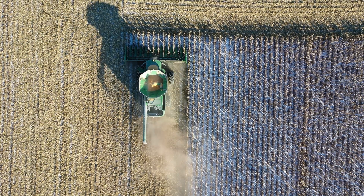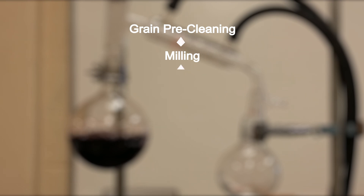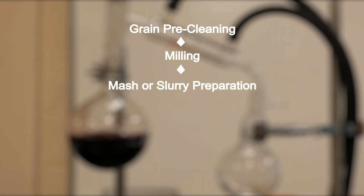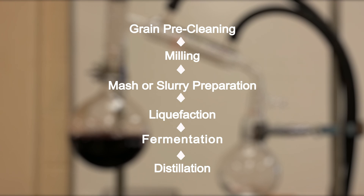Ethanol production process mainly involves: Grain Precleaning; Milling, to reduce the particle size of raw material; Mash or slurry preparation; Liquefaction, where cooking and enzyme addition is done; Fermentation, where conversion of an organic material from one chemical form to another is produced using enzymes; and Distillation, where ethanol is separated from the ethanol-water mixture.